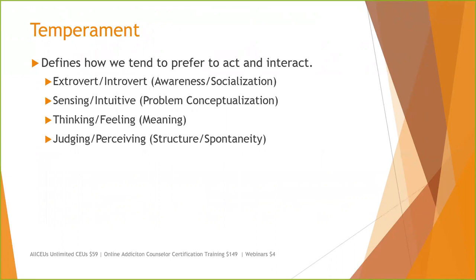When we're getting ready to intervene with someone, what do we need to know about them in order to effectively intervene? An extrovert is going to want to be around other people, so if they experience something that leads them to feel isolated, that may precipitate more of a crisis. If they're an introvert and they feel like everybody's looking at them, that could escalate the situation. We want to be aware of what will exacerbate the crisis and what we can do to reduce stress in the immediate moment.